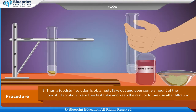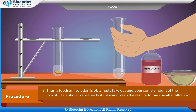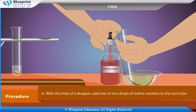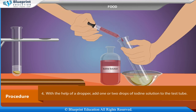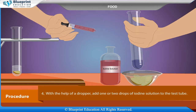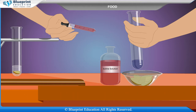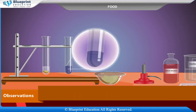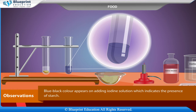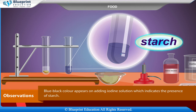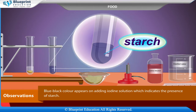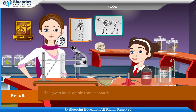Take out and pour some amount of the food stuff solution into another test tube and keep the rest for future use. After filtration, with the help of a dropper, add one or two drops of iodine solution to the test tube. Observation: a blue-black color appears on adding iodine solution, which indicates the presence of starch.